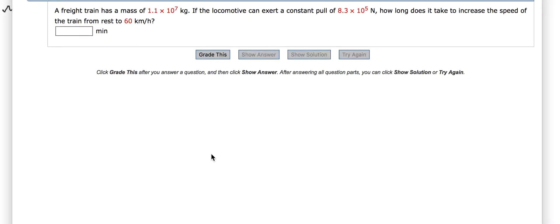A train has a mass of 1.1 times 10 to the 7 kilograms. If the locomotive can exert a constant pull of 8.3 times 10 to the 5th newtons, how long does it take to increase the speed of the train from rest to 60 kilometers per hour?